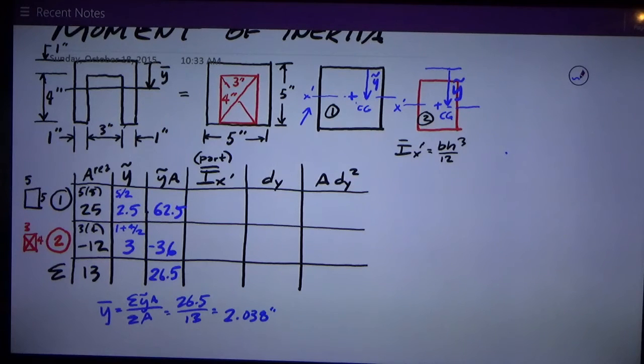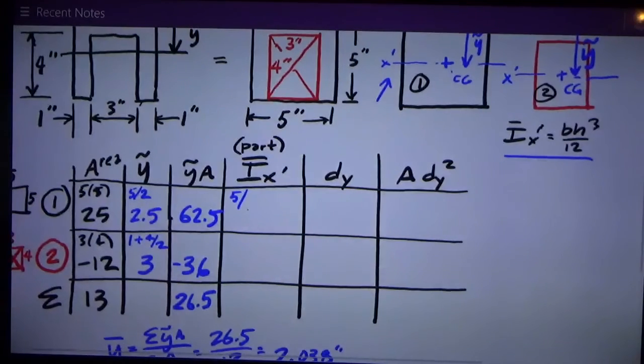For a rectangle it's always b h cubed over twelve, where b is the base and h is the height of the rectangle. So the numbers for the five by five positive area are five times five cubed divided by twelve, and that works out to be fifty-two point oh eight. My units of this are inches to the fourth.